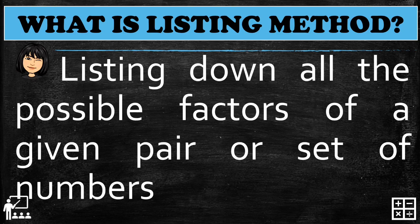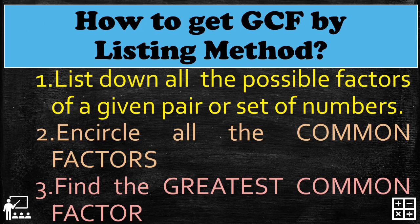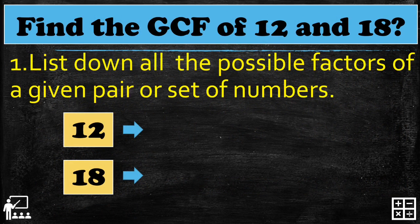So how do we get the GCF by listing method? We have three steps. First, list down all the possible factors of a given pair or set of numbers. Second, encircle all the common factors. And third, find the greatest common factor. Let's try: find the GCF of 12 and 18.